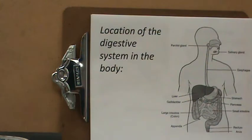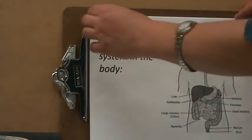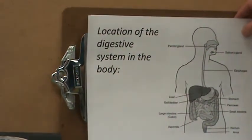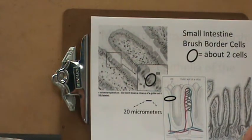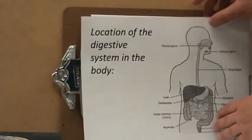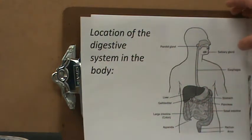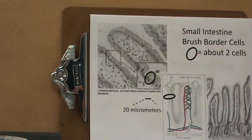The digestive system takes most of the space in the internal organs of the body. The small intestine is after the esophagus, before the stomach — a very long, folded intestine called the small intestine.